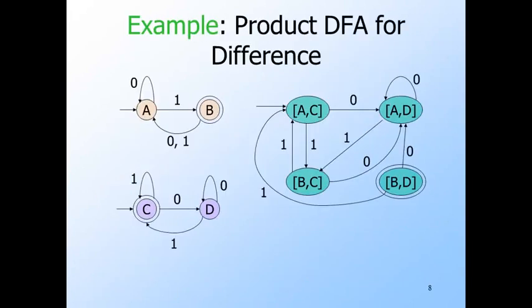Here's our favorite product automaton again. This time, BD is the only final state, because B is the only final state of the orange automaton. Notice that the final state BD is not reachable from the start state, so this version of the product automaton accepts the empty language. That's exactly as it should be, because the first automaton accepts all strings that end in an odd number of ones, while the second accepts all strings that end in at least one one, plus the empty string.